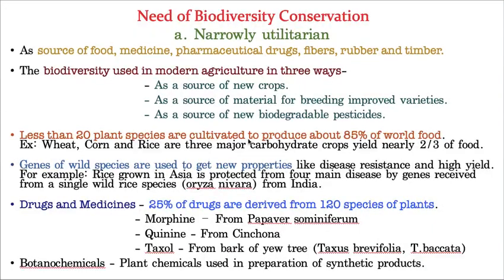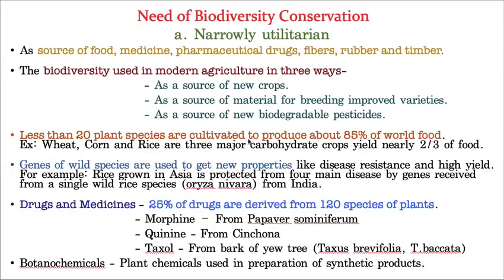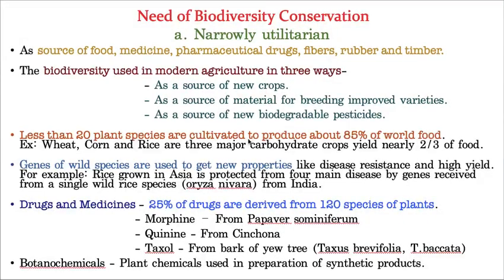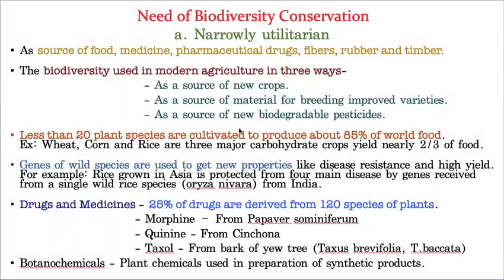The next use of narrow utility is drugs and medicines. About 20 to 25 percent of drugs are derived from 120 species of plants. For example, morphine is taken from the Papaver genus, quinine is taken from the Cinchona genus, and taxol is derived from the bark of the Taxus genus. Botanochemicals - that means plant chemicals used in the preparation of synthetic products - are also important uses of biodiversity in terms of food, medicine, pharmaceutical drugs, fibers, rubber, and timber.